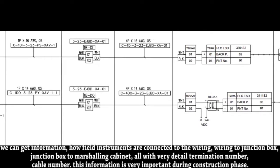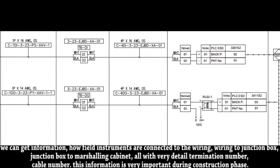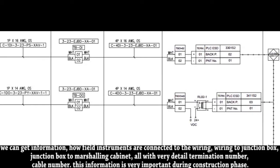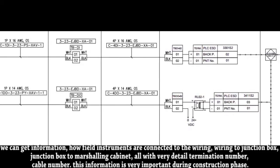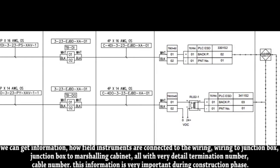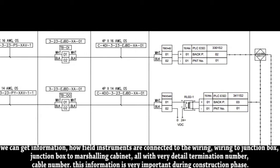We can get information how field instruments are connected to the wiring, wiring to junction box, junction box to marshalling cabinet, all with very detailed termination number, cable number. This information is very important during construction phase.